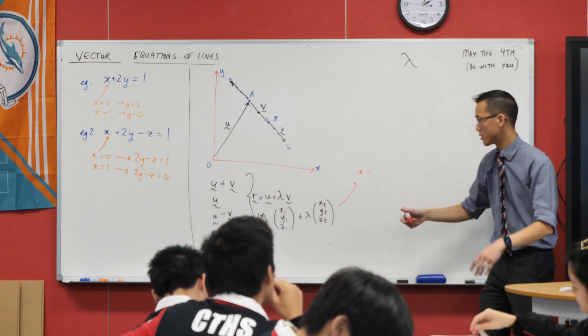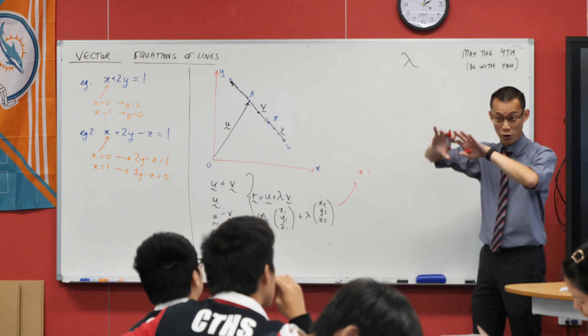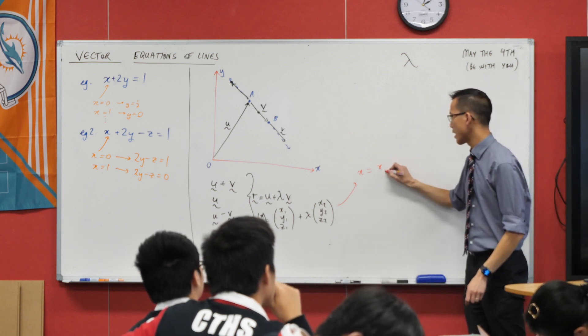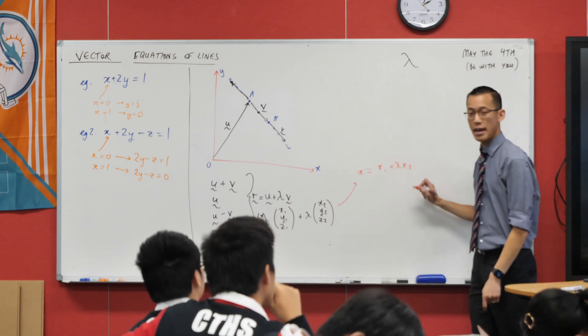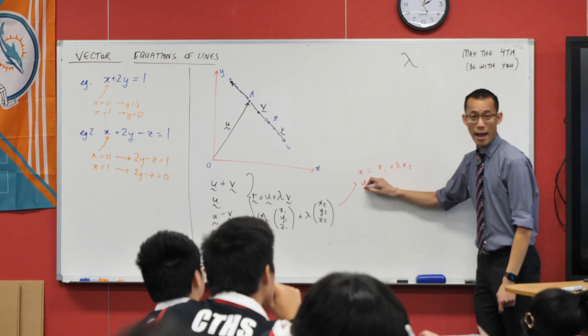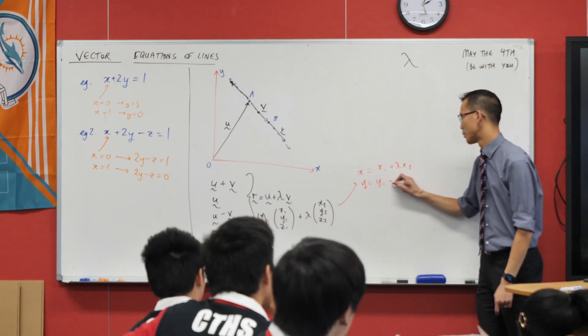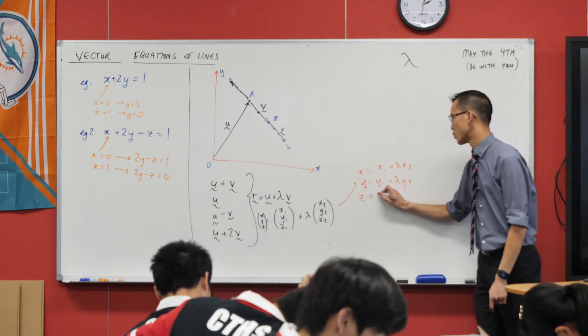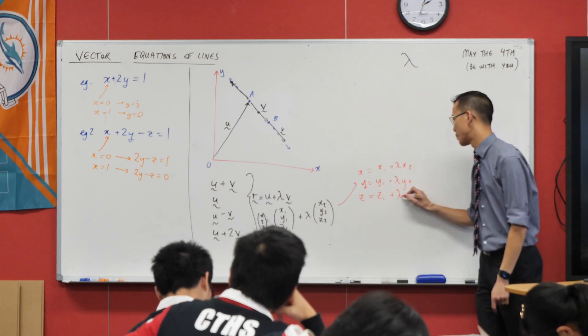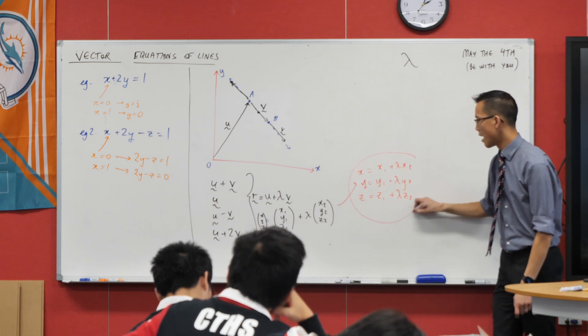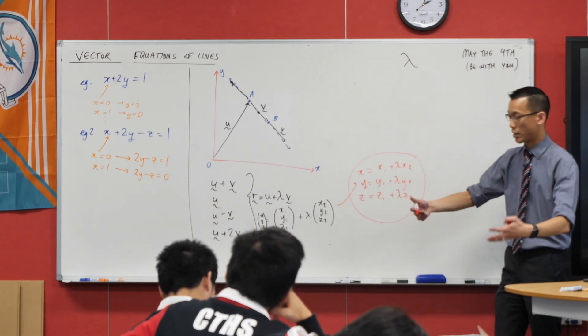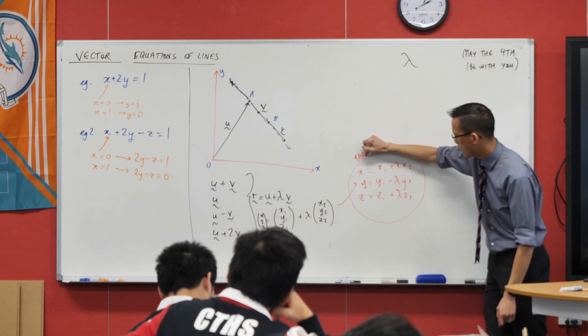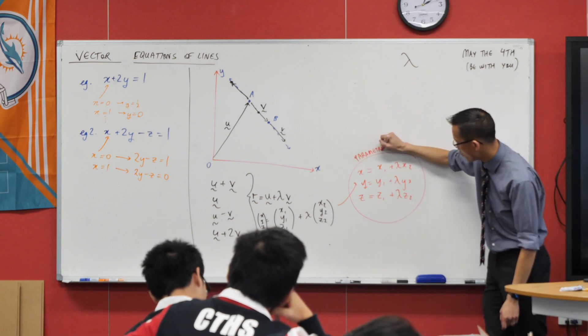Compare all those x components because they don't interact, they're orthogonal to the y and z so I can treat them separately. x equals x₁ plus lambda x₂, y equals y₁ plus lambda y₂, z equals z₁ plus lambda z₂. These are what we call the parametric equations and the specific parameter that you use...